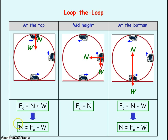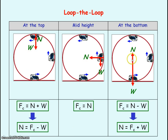The normal reaction force has its least value when the car is at the top of the loop, because the normal reaction force is working with the weight to provide the centripetal force. However, the normal reaction force has its greatest value when the car is at the bottom of the loop, because the normal reaction force has to provide the centripetal force as well as overcome the weight of the car.